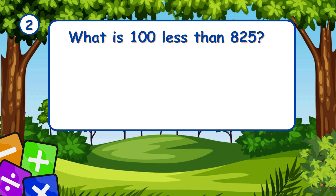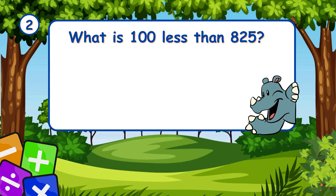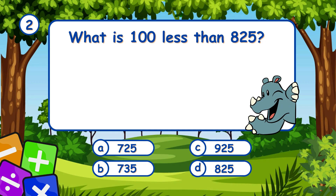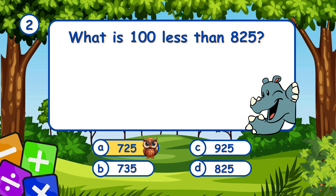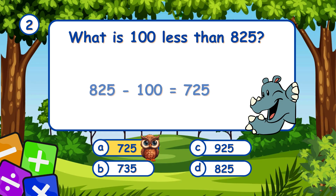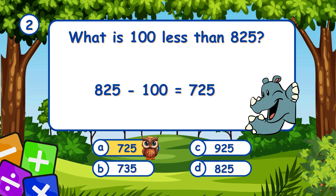What is 100 less than 825? It's A, 725. Subtracting 100 from 825 gives 725.